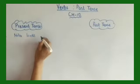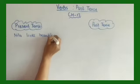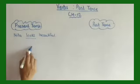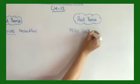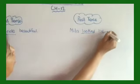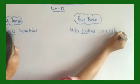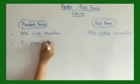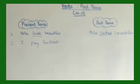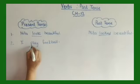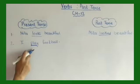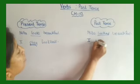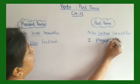Look at the sentence: 'Meeta looks beautiful.' Which one is the verb? 'Looks' — this is present tense. In past tense it will become 'Meeta looked beautiful.' Let's take another example: 'I play football.' The verb is 'play.' If I change this to past tense, the sentence will be 'I played football.'